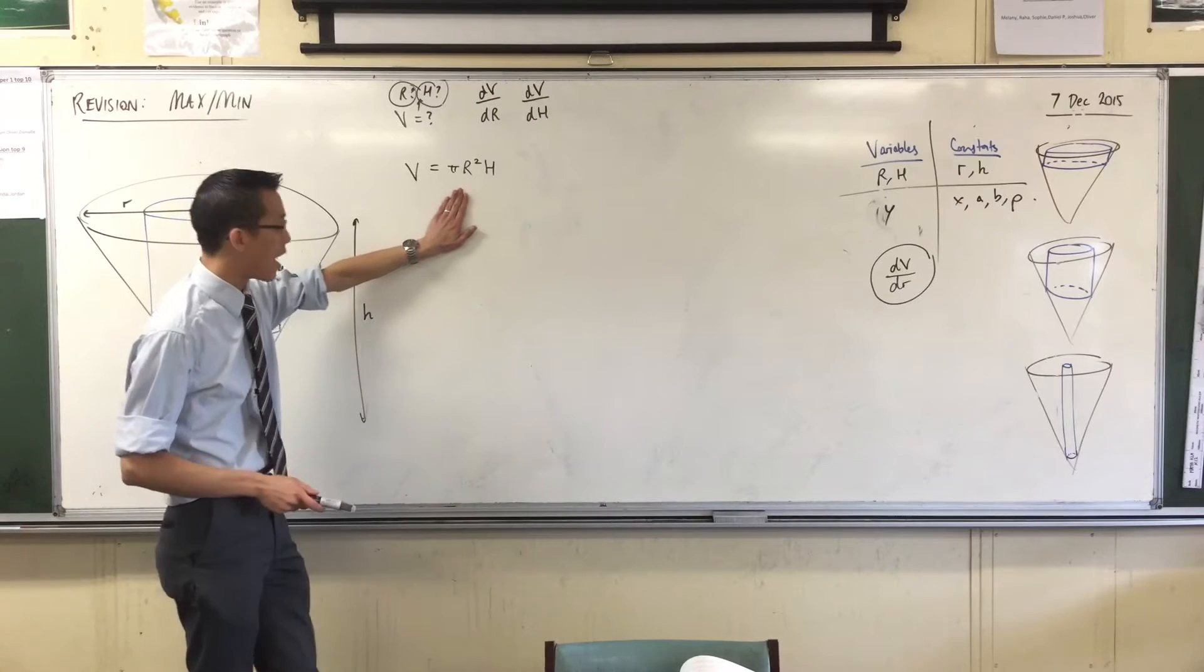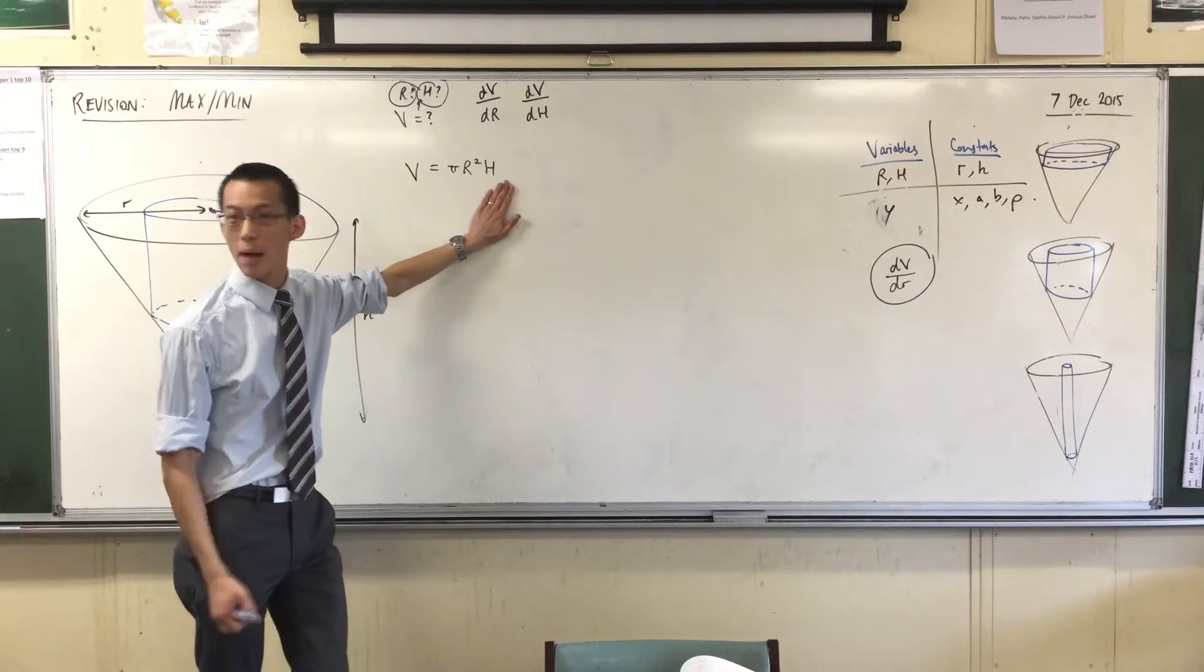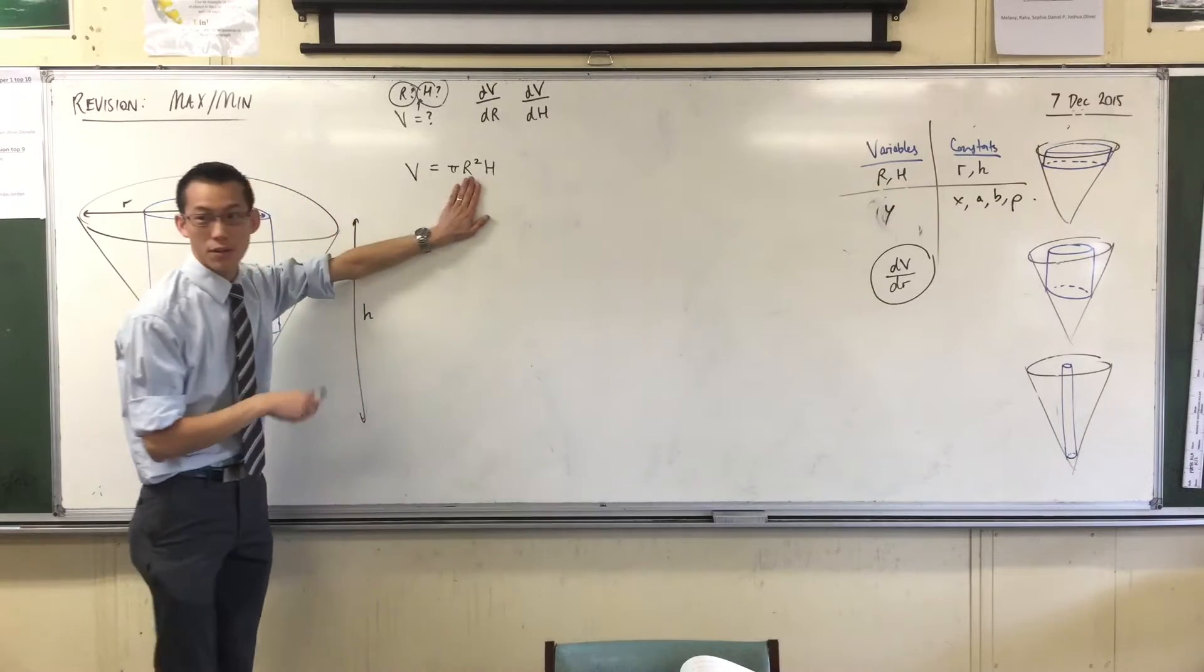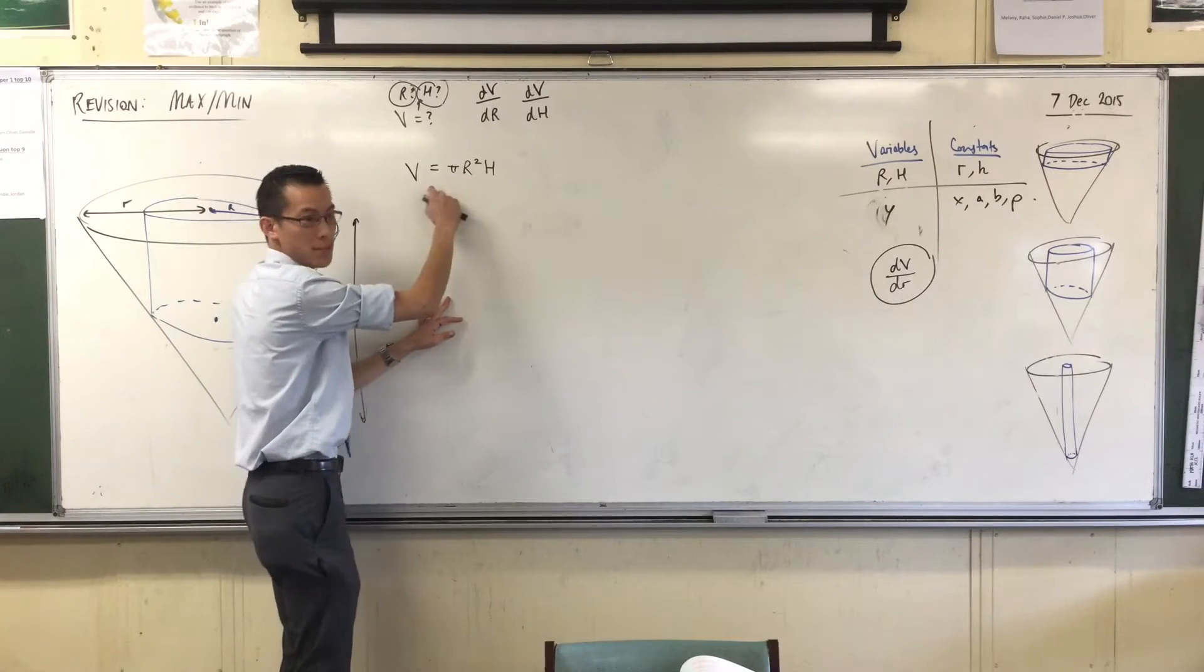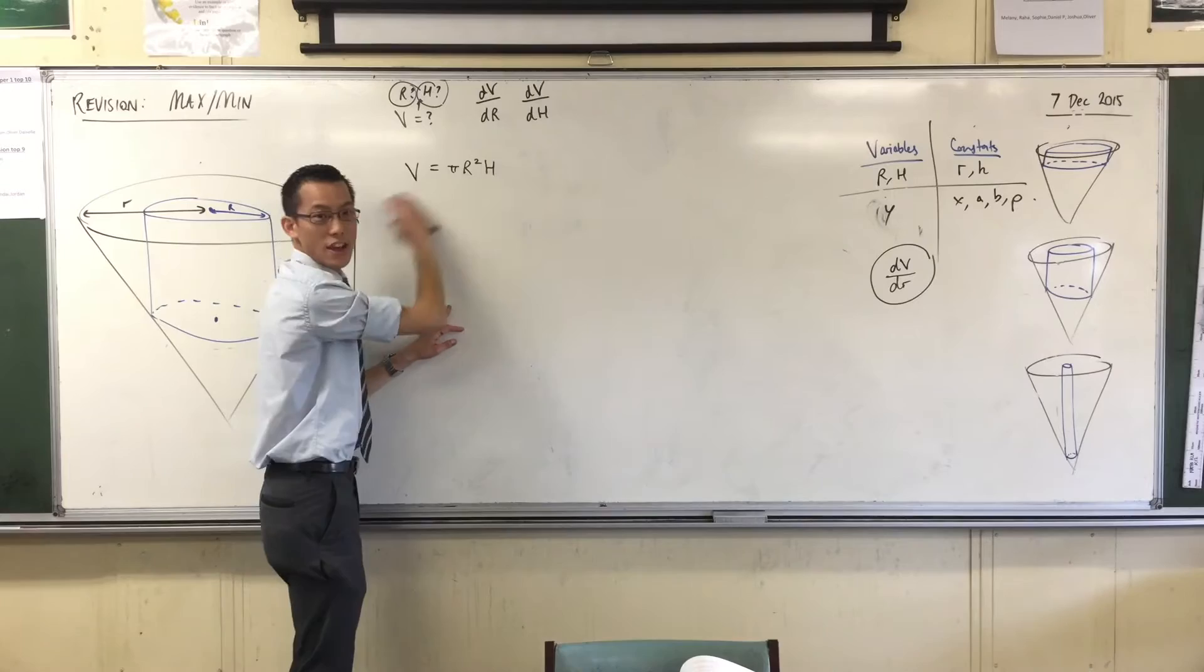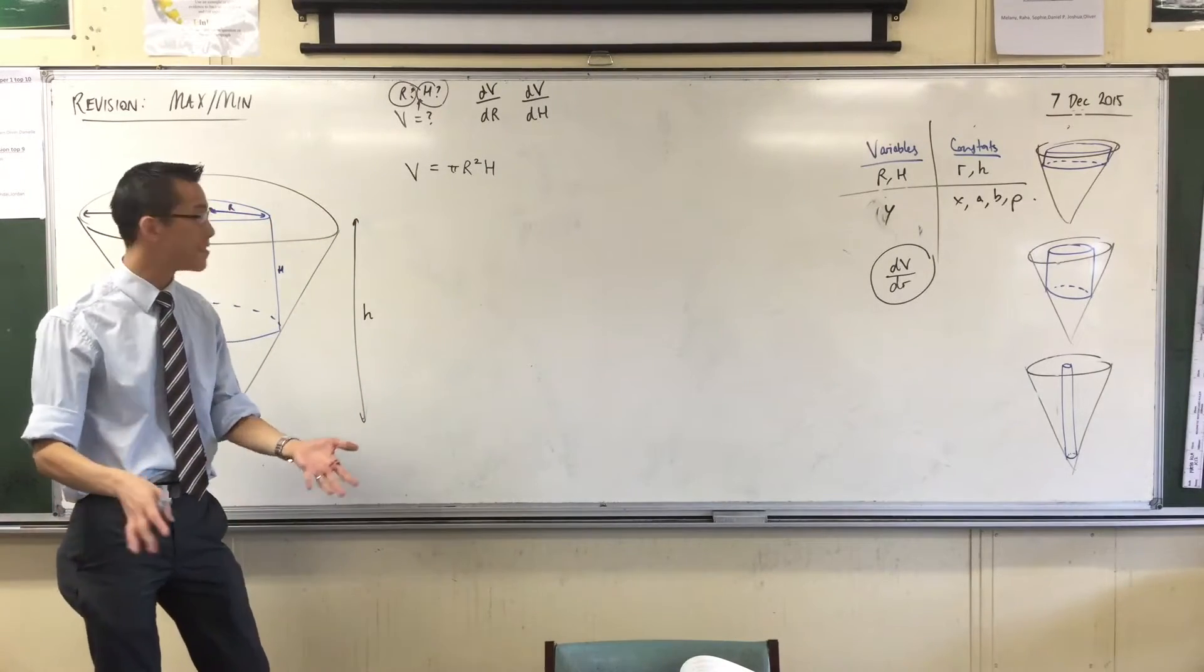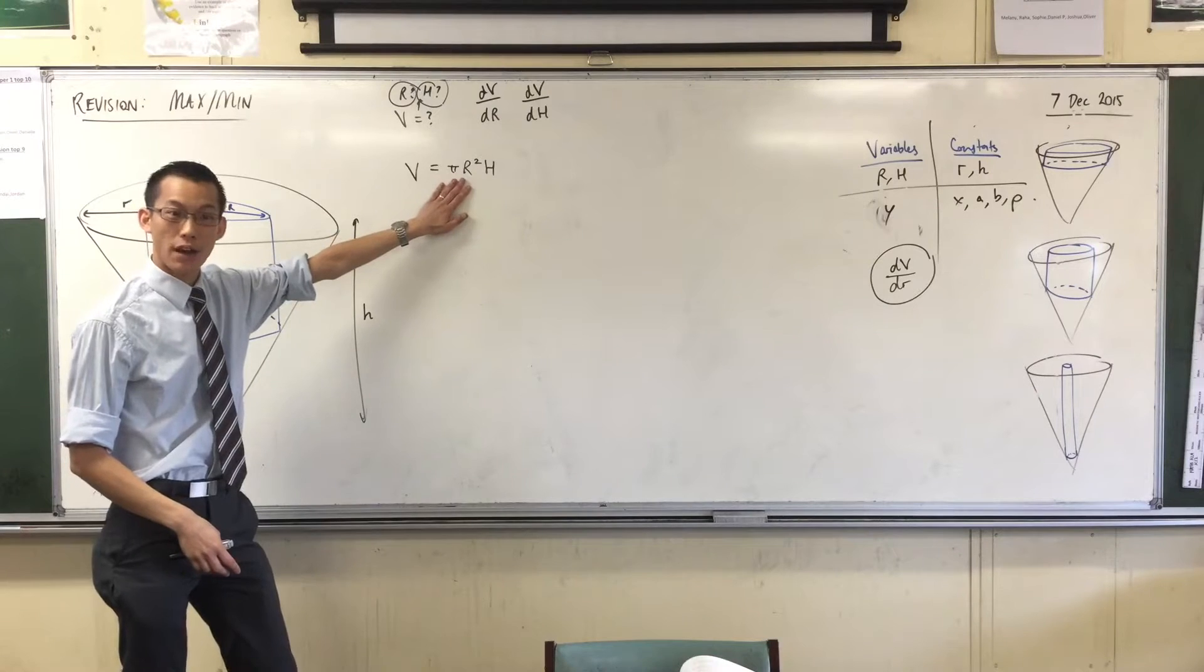If I were to replace the R with something in terms of H's, I'm going to introduce a square root in there. So this will be in terms of something like square root of H times H. And there will be my formula for volume. That's gross. Don't want to do that. So therefore, I'm going to get rid of H.